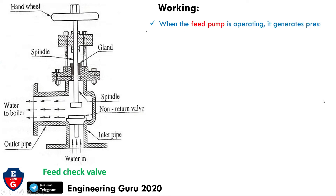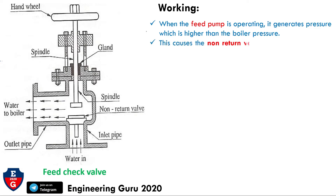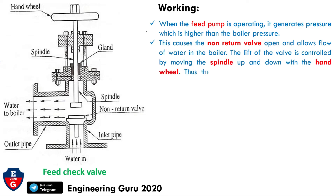When the feed pump is operating, it generates pressure higher than the boiler pressure. This causes the non-return valve to open and allows the flow of water into the boiler. The lift of the valve is controlled by moving the spindle up and down with the hand wheel, thus controlling the flow of water to the boiler.